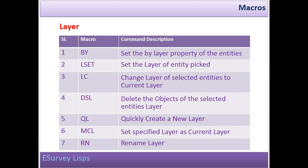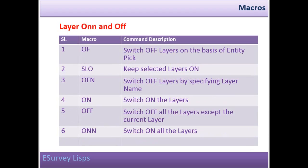Layer macros: BY — Set the bi-layer property of entities. LSET — Set the layer of a picked entity. LC — Change layer of selected entities to current layer. DSL — Delete the objects of the selected entity's layer. QL — Quickly create a new layer. MCL — Set specified layer as current layer. RN — Rename layer.